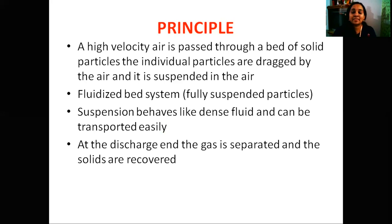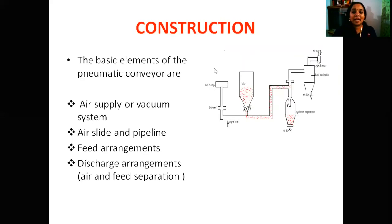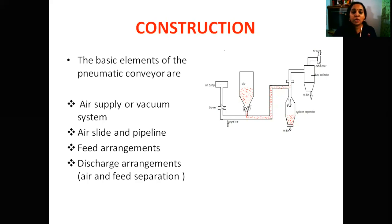The feed material will be separated. Here are the basic elements: air supply or vacuum system, air slide and pipeline, feed arrangement, discharge arrangement, air pump, and blowers along with the fan. The air pump and pipeline are introduced to a particular velocity.